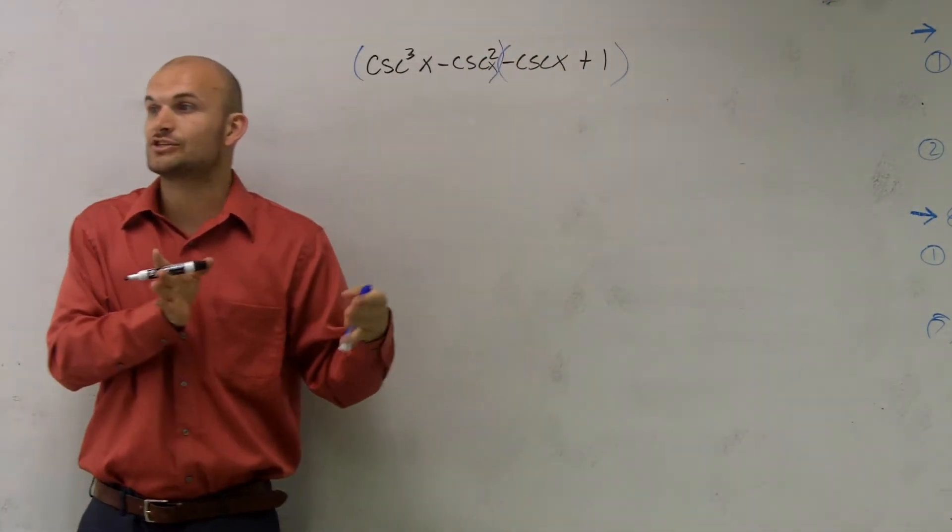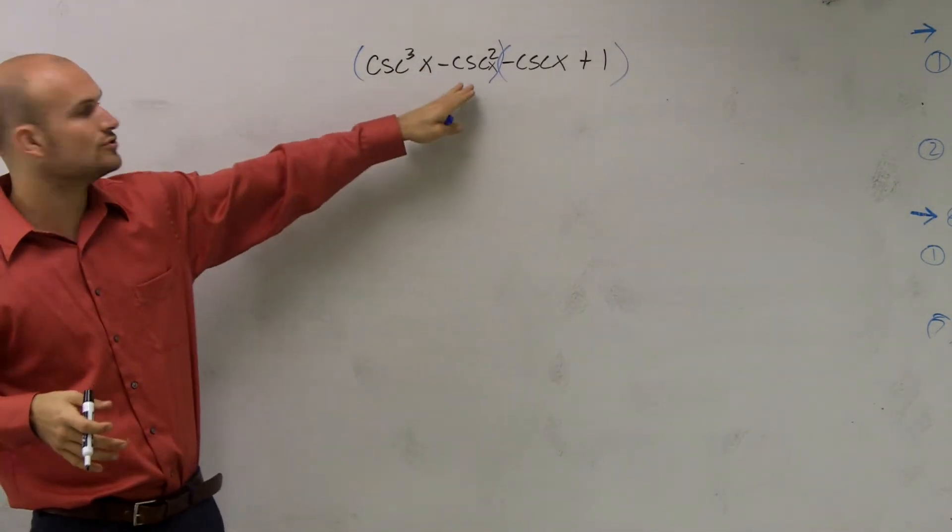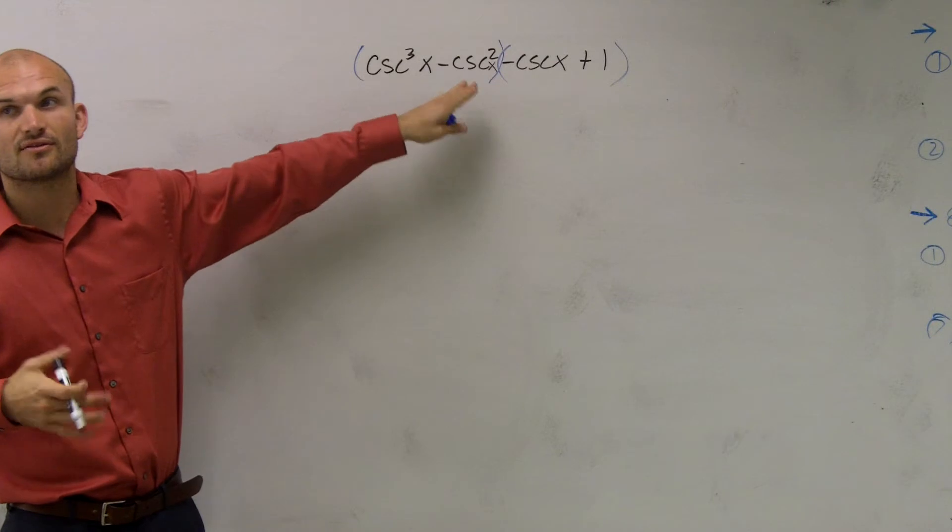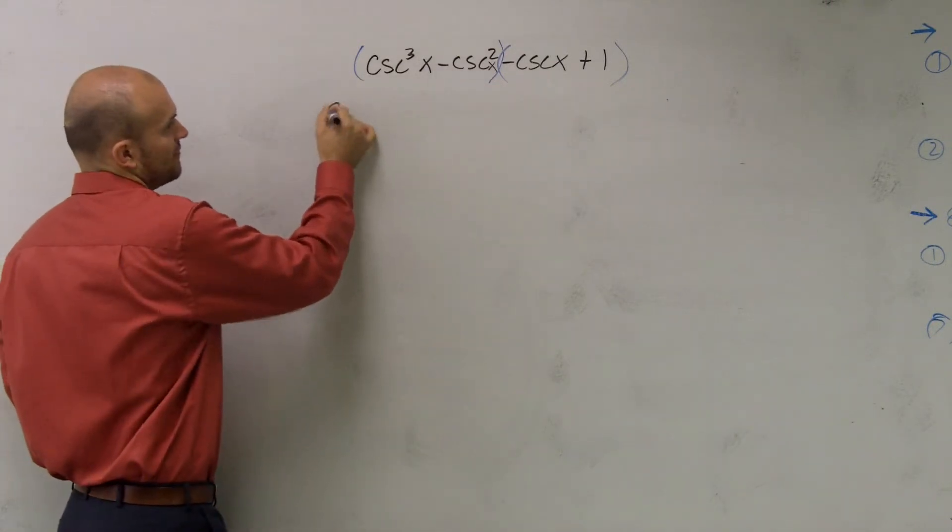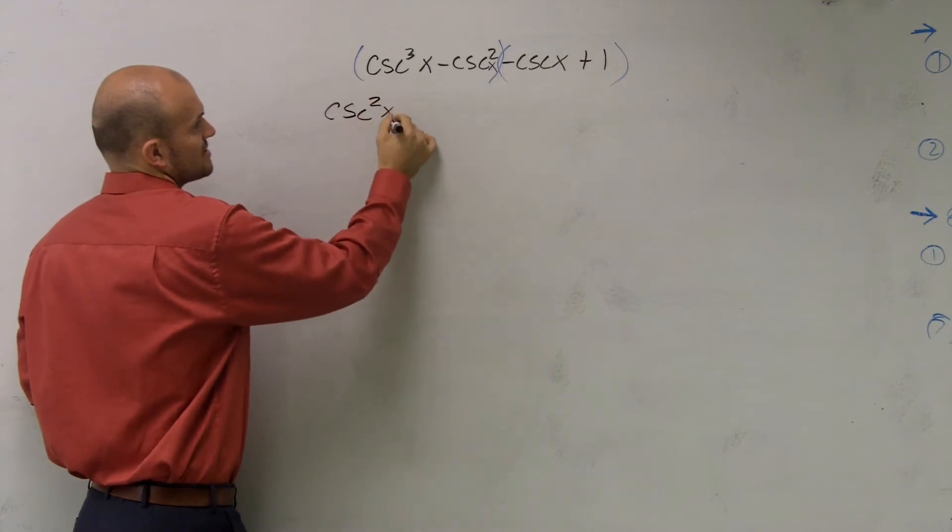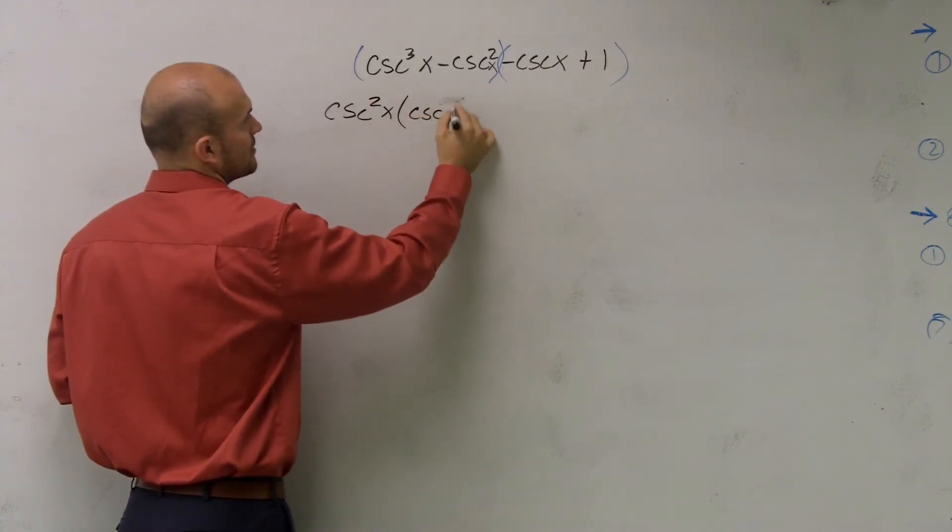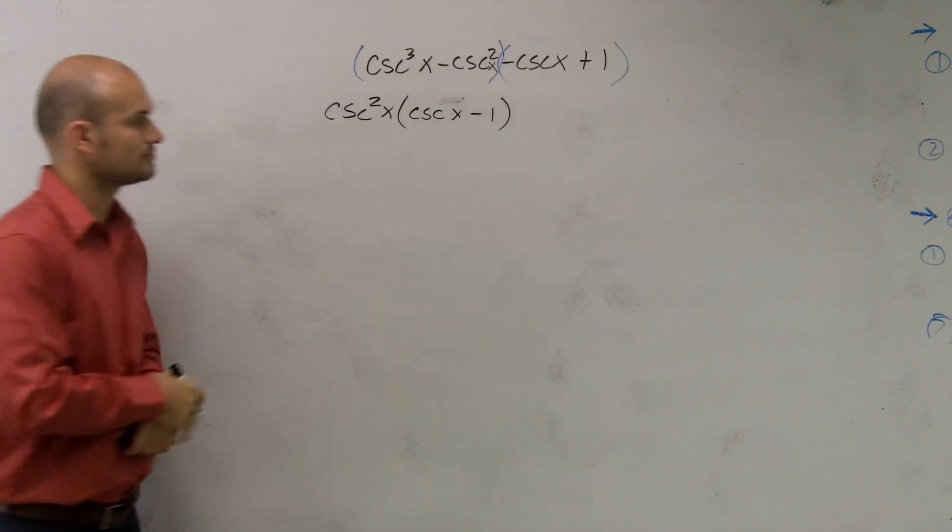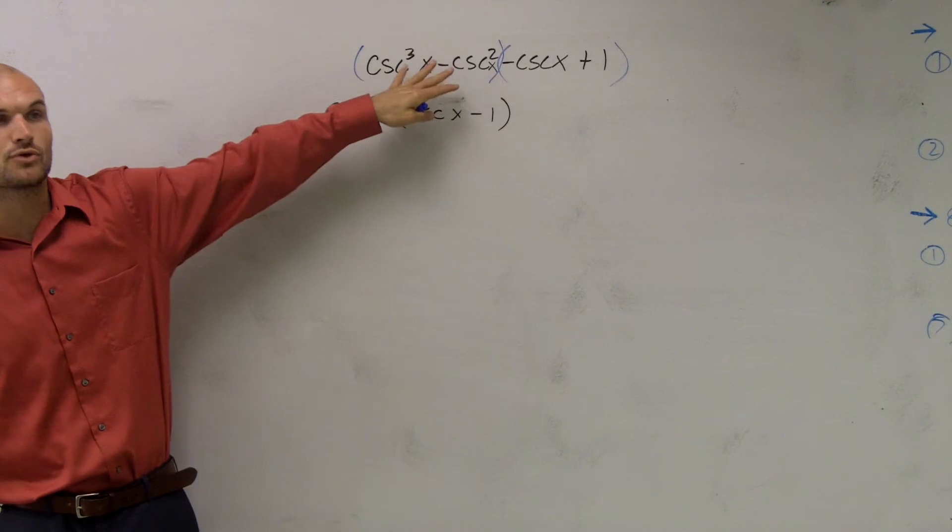Then what I'll do is I'll factor out a GCF separately for these first two terms. So I look at here and I say, what do these two terms share? Well, the greatest common factor you could say is cosecant squared. So I'll factor out a cosecant squared of x, and I'll be left with one more cosecant of x minus 1. Does everybody see what I did? Just kind of like that last problem I did, but you're only working with the first two terms.